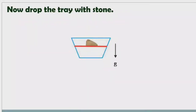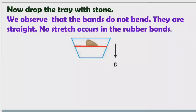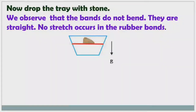Now drop the tray with the stone. The tray along with the stone is falling freely. We observe that the bands do not bend — they are straight and no stretch occurs in the rubber bands. When falling freely, the stone experiences weightlessness, which is why no stretch occurs in the rubber bands.